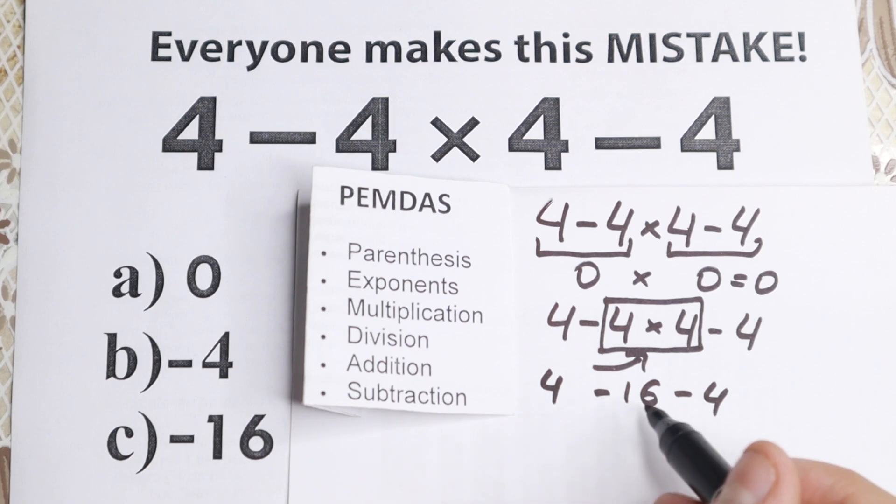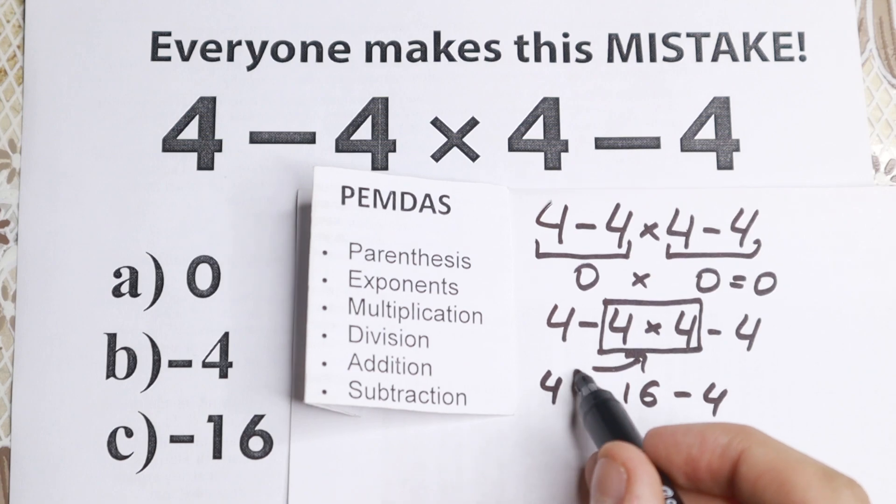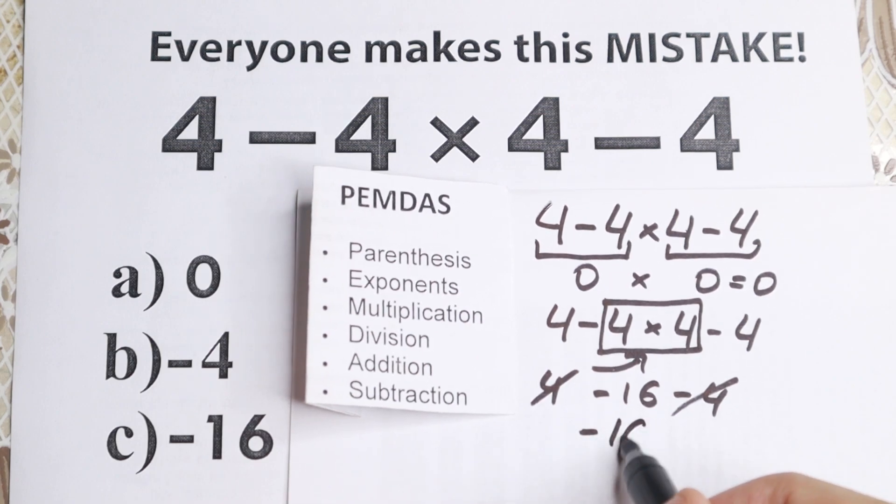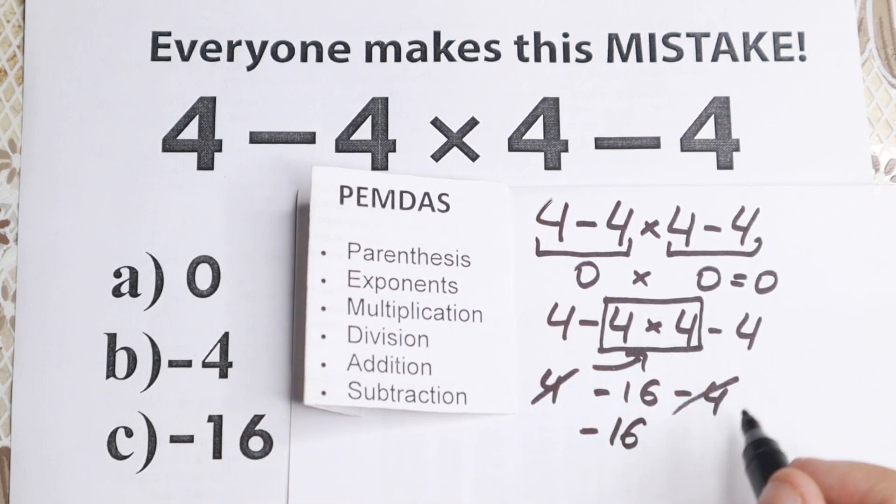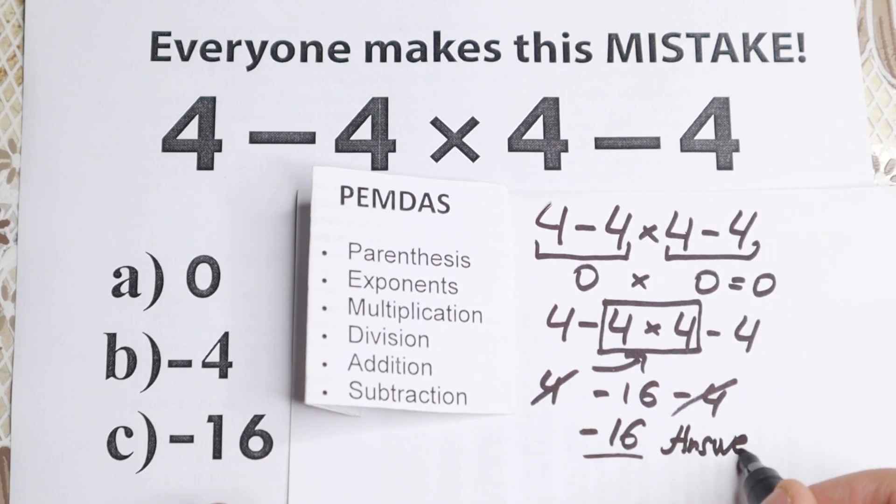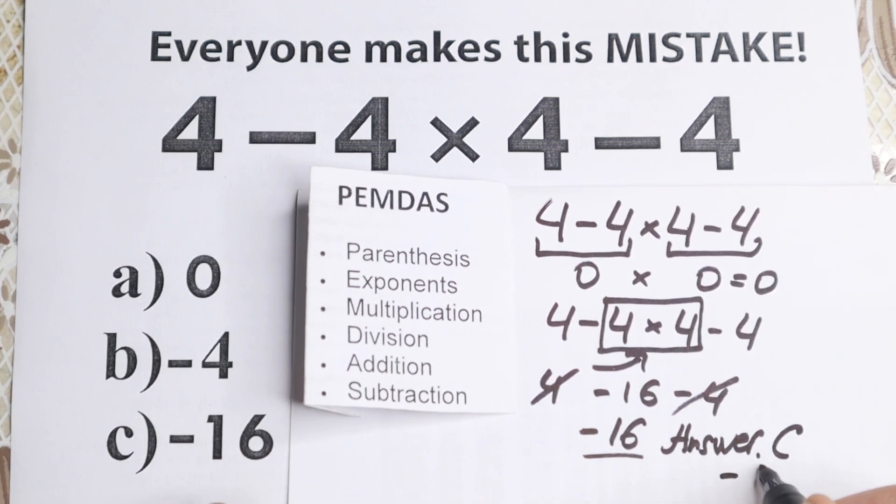So in the end we have like classic subtraction right here, but if you know a little bit math you can easily cancel this 4 and minus 4. This equals 0. And as you can see we still have minus 16, which is our answer according to PEMDAS order and according to most internet libraries, scientific calculators and graphing calculators, because this is absolutely correct answer nowadays. So as you can see I write it right here, the answer is this option C, minus 16.